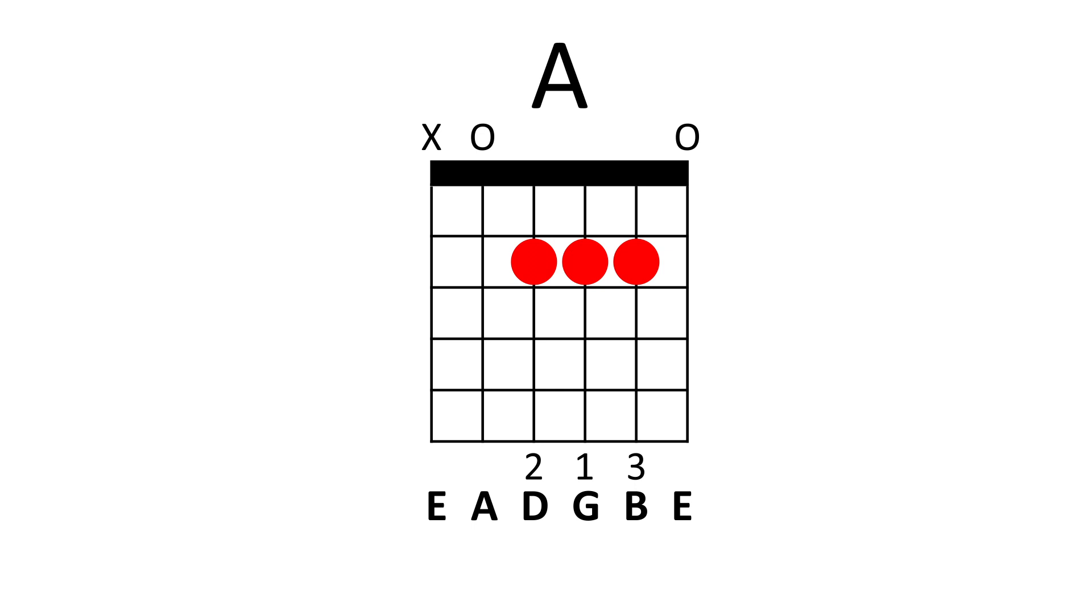Anyways, for the A major, on the fifth string, the fifth string is tuned to an A note, so that's just an A note. On the fourth string, that fourth string is tuned to a D note, but we're playing the second fret, which means the second fret is an E note. The third string, it's tuned to a G note, but we're playing the second fret again, which means that note is an A note, and the second string is tuned to a B note, but we're playing again on the second fret, which means that note is a C-sharp note. And finally, the first string is tuned to an E note.